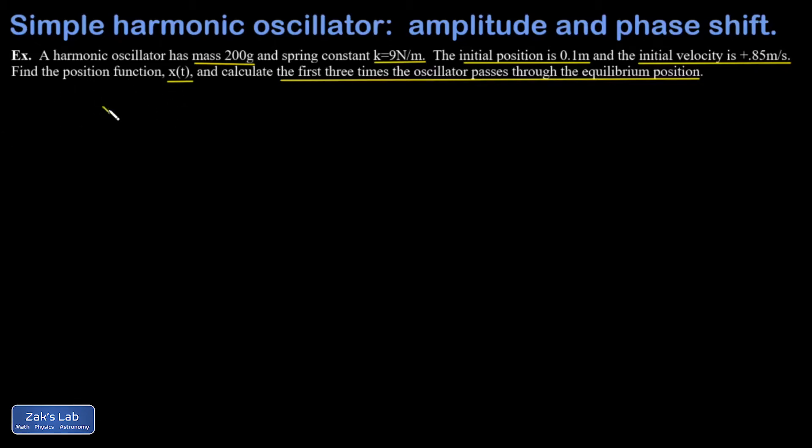So we simply start by saying the general solution of a harmonic oscillator is A cosine root k over m t plus φ. The two unknowns here are A and φ. That's why I require two initial conditions. I'm going to work in decimal approximations throughout this entire problem. So let's get an approximation of root k over m. Make sure you work in the right units of kilograms there. And I get approximately 6.71 for that.